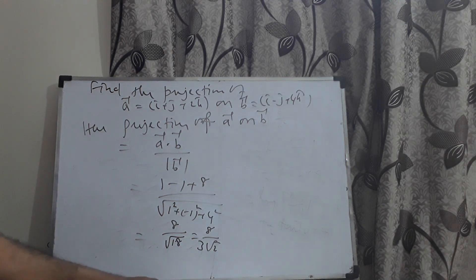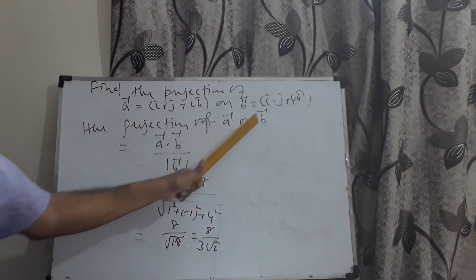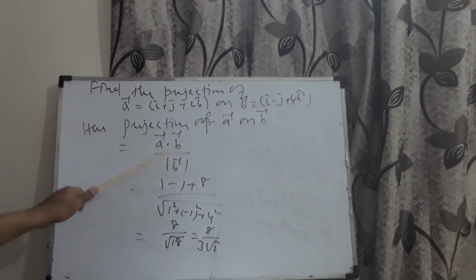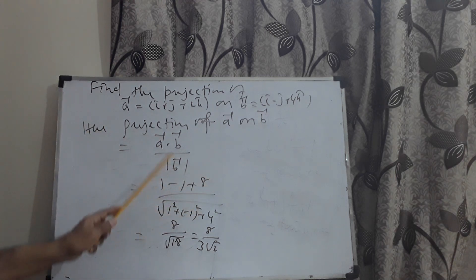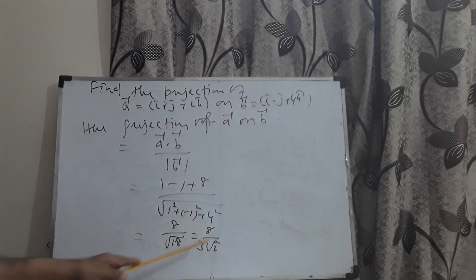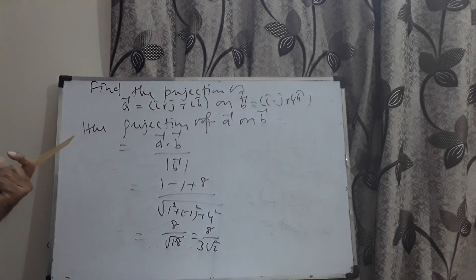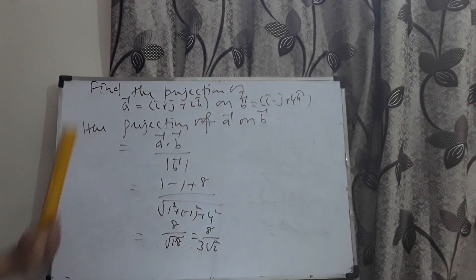To recap: projection of a = i + j + 2k on b = i − j + 4k uses the formula a·b / |b|. The dot product is 1·1 + 1·(−1) + 2·4 = 8; 1 − 1 cancels, leaving 8. The modulus |b| = √(1 + 1 + 16) = √18 = 3√2, giving projection = 8/(3√2). If the question asks for projection of (a + b) on (a − b), compute c = a + b and d = a − b, then apply c·d / |d|.